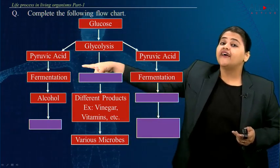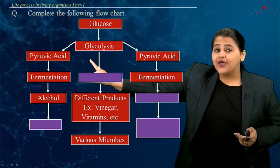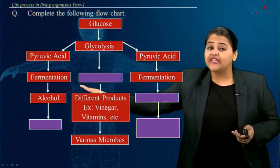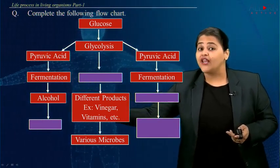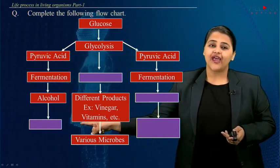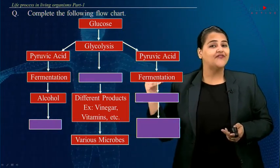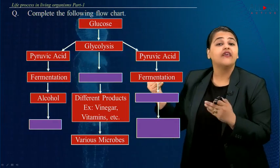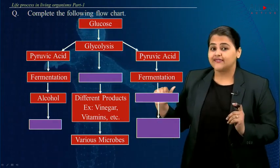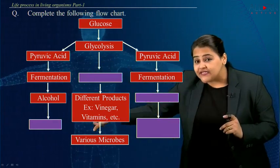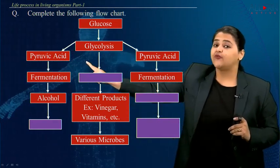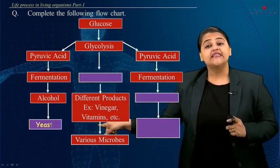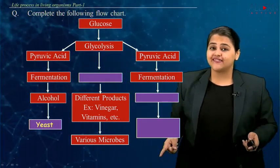On the other hand, you have pyruvic acid which is formed through glycolysis and undergoes fermentation to form alcohol. This process — pyruvic acid → fermentation → alcohol — is done by the organism yeast.